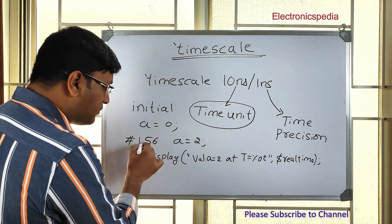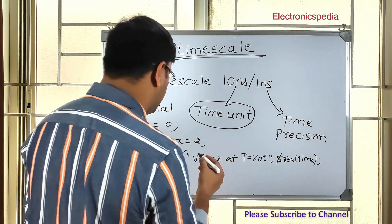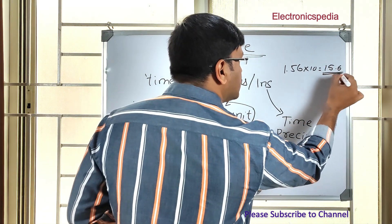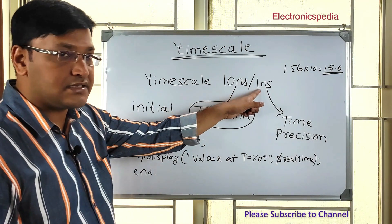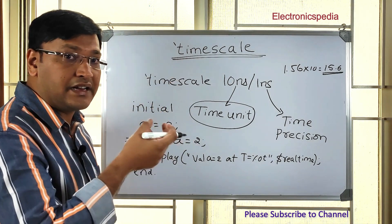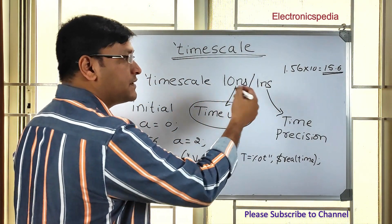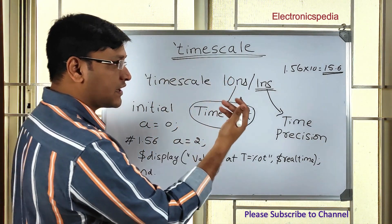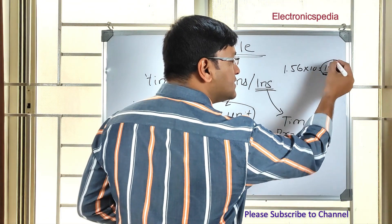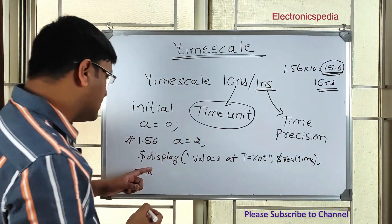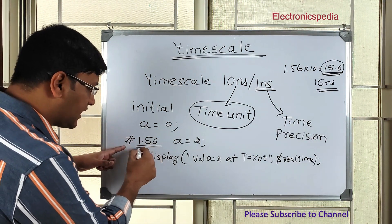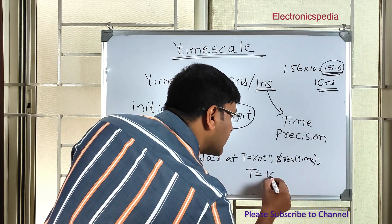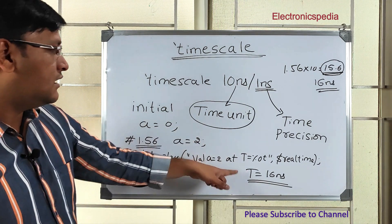Whatever hash value is specified — here 1.56 — we multiply it by the time unit, which is 10 nanoseconds, giving 15.6 nanoseconds. The precision is 1 nanosecond, meaning time can only increment in steps of 1 nanosecond. So 15.6 gets rounded to the nearest value, which is 16 nanoseconds. That means A will be displayed at a real time of 16 nanoseconds.